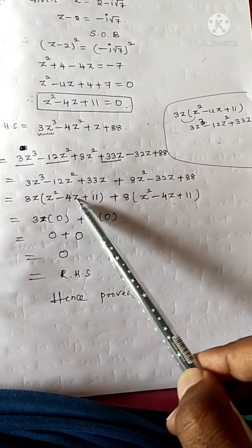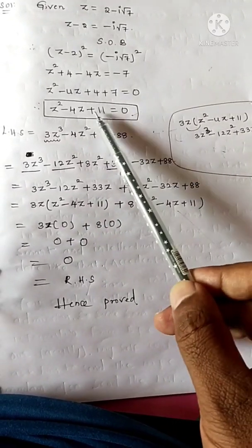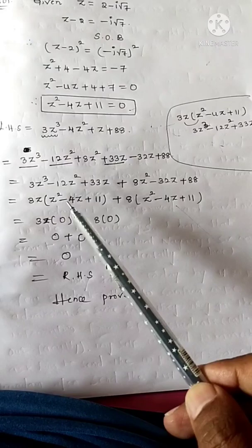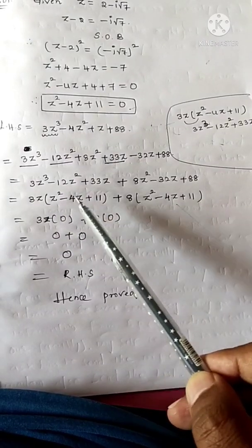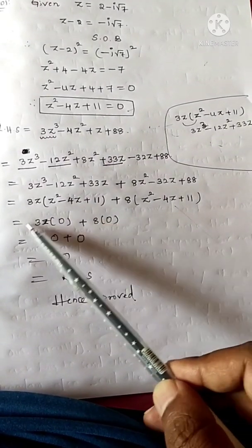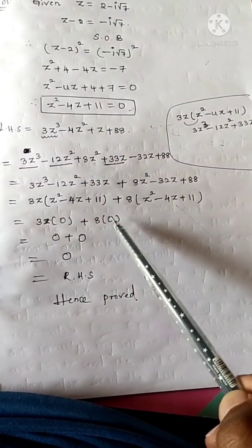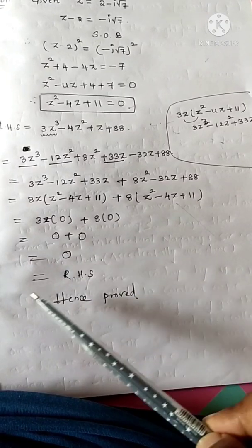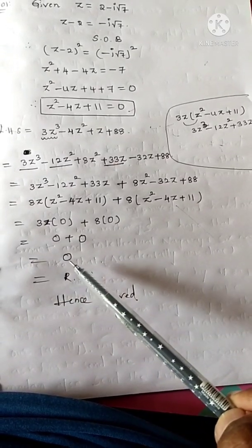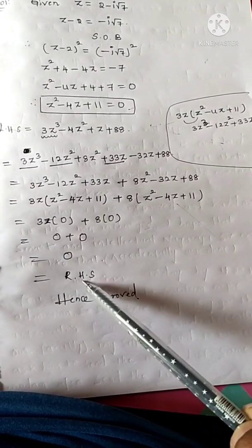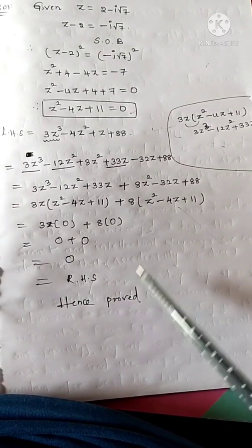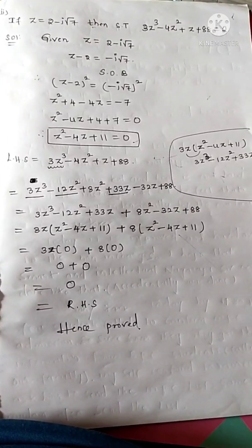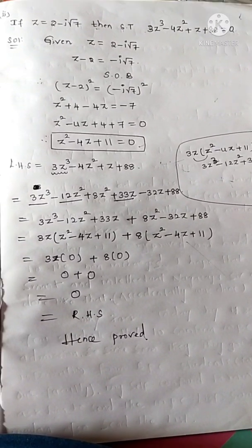Taking 3z as common in the first three terms and 8 as common in the remaining terms, each factor equals zero using the relation z square minus 4z plus 11 equal to 0. This product is zero, so the sum is zero. Finally we got the right side part is zero — RHS. Hence proved. This is a very very important result.